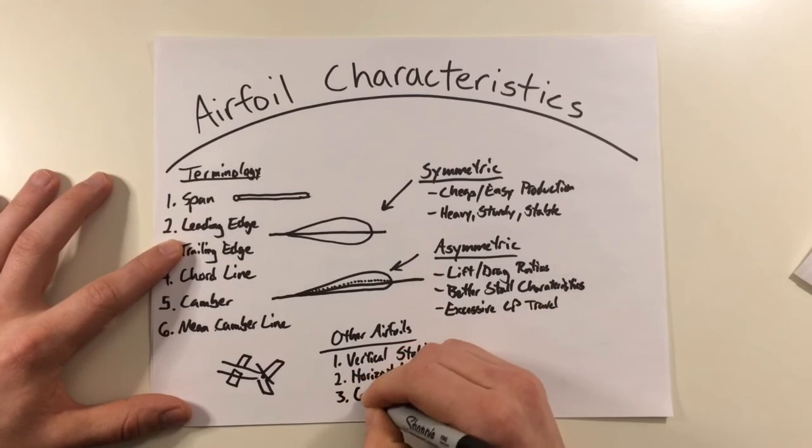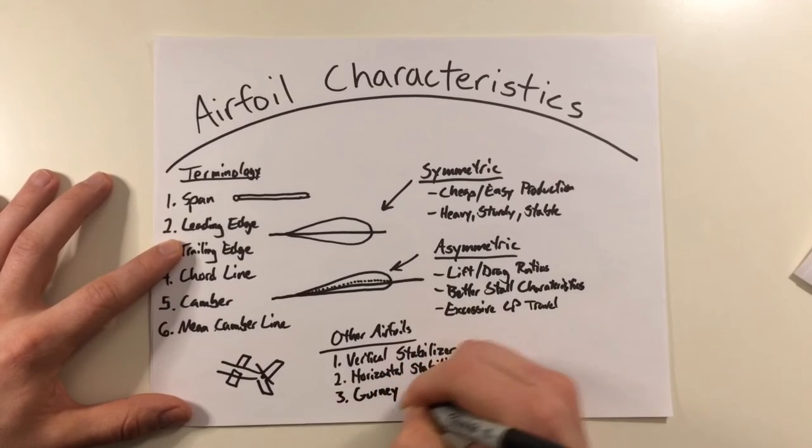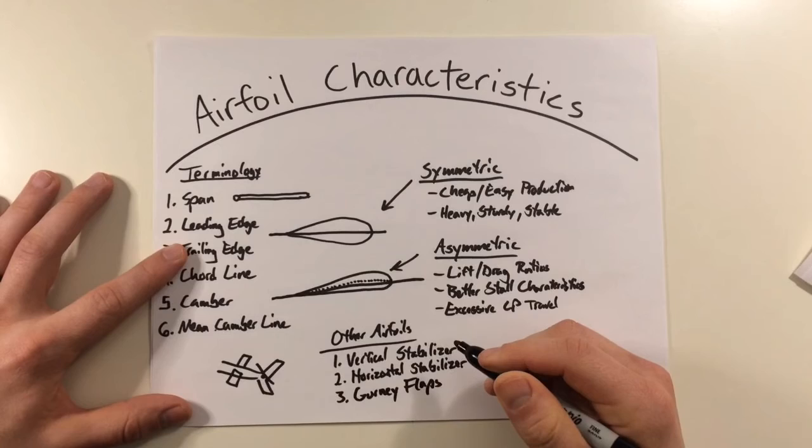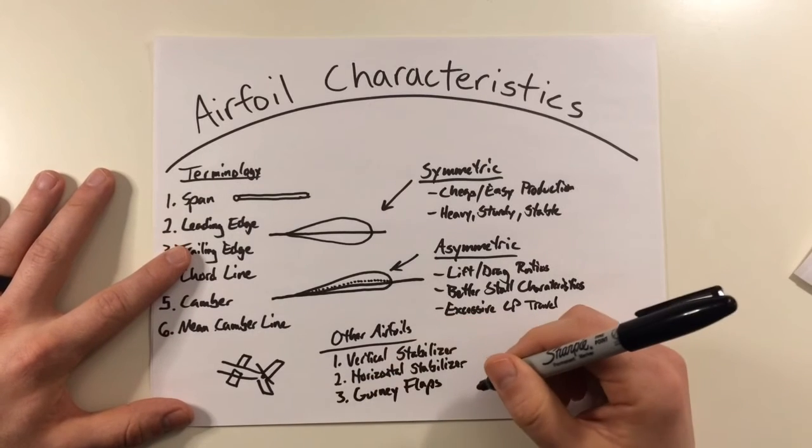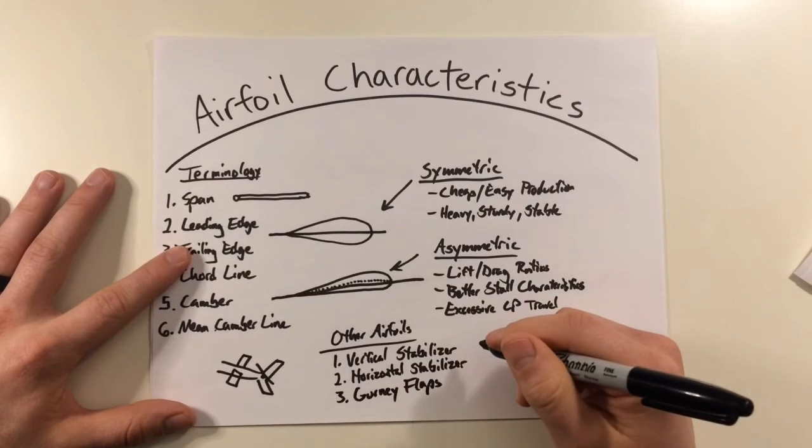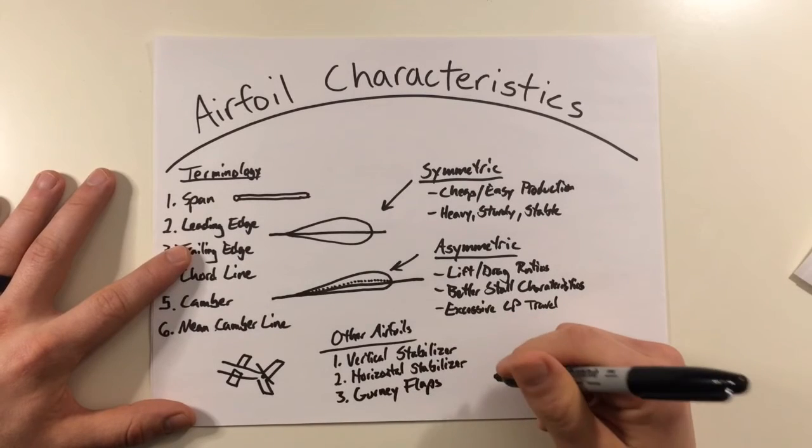Lastly, you may see things called gurney flaps, which a gurney flap is just part of an airfoil. It's not really an airfoil itself. But these are just strips of metal mounted 90 degrees perpendicular to the chord line on the trailing edge of the airfoil.